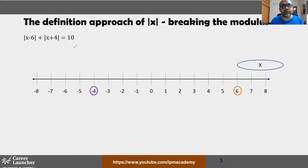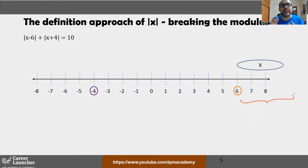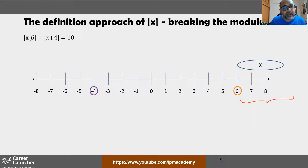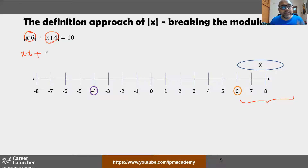This is similar to the tick-and-cross method used in inequalities. Since both expressions are positive in this region, by the definition we write them as they are: (x − 6) + (x + 4) = 10, giving 2x − 2 = 10, so 2x = 12, and x = 6.